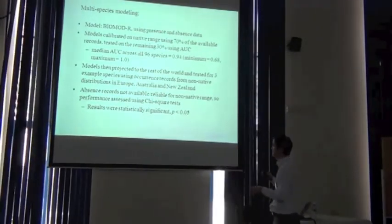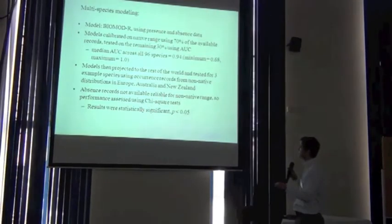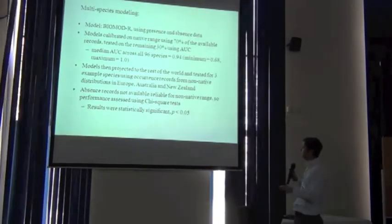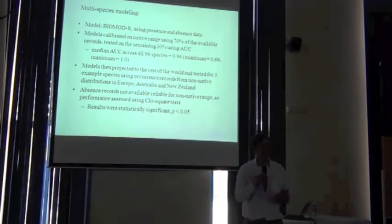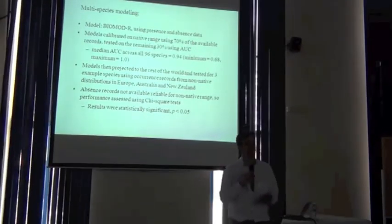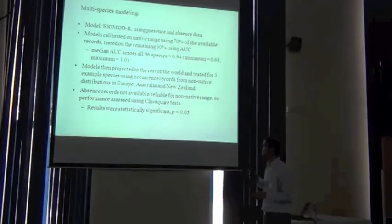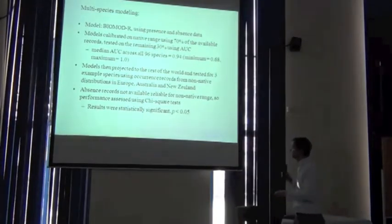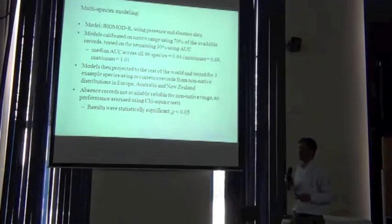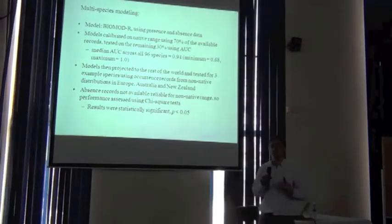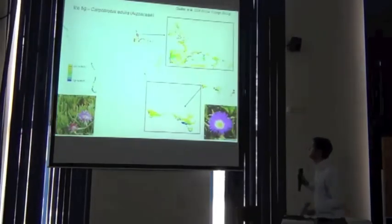They used exactly the binomial tests as we described. They implemented it with a chi-squared approximation of the binomial test, but essentially it's exactly the same test we've talked about this week. They argued that the results were statistically significant, so the models were significant in predicting into these new regions.